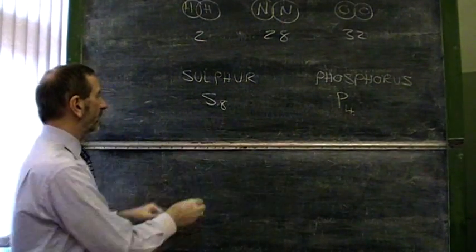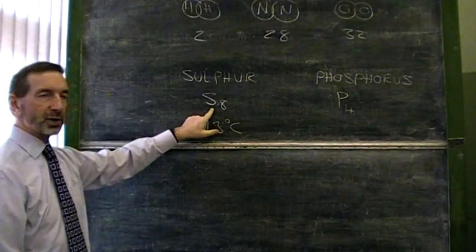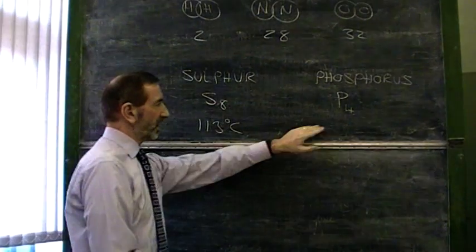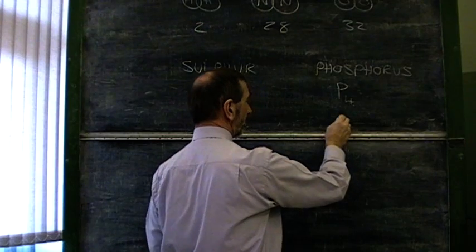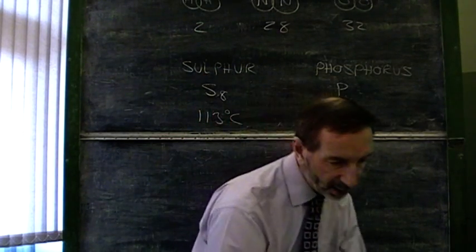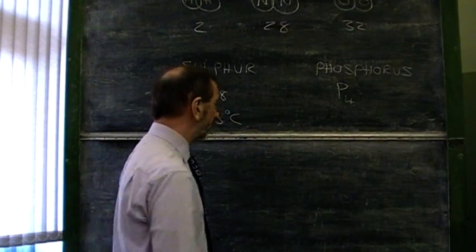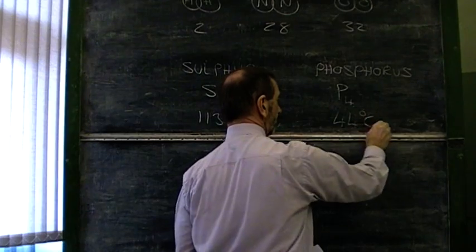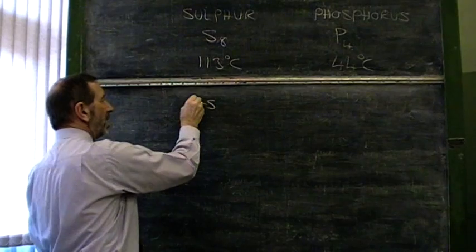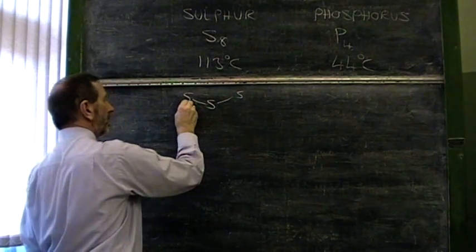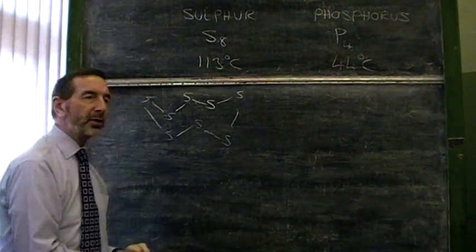The melting point of sulfur is 113 degrees Celsius, reflecting the fact that it's got quite a big molecule. Phosphorus, a smaller molecule, has a smaller melting point. Its melting point of phosphorus, can't quite remember. Let's check it out. If the melting point of phosphorus is 44 degrees Celsius, here we are. Now, what does S8 represent? It represents a ring of about eight sulfur atoms organized into a crown shape.